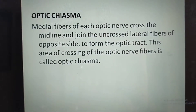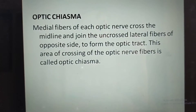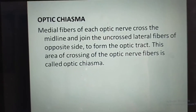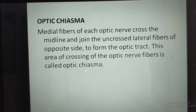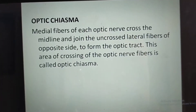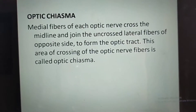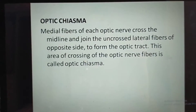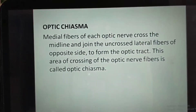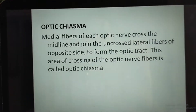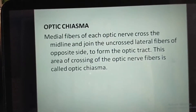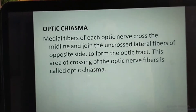Medial fibers of each optic nerve cross the midline and join the uncrossed lateral fibers of the opposite side to form the optic tract. This area of crossing of the optic nerve fibers is called the optic chiasma. The optic chiasma is the X-shaped structure formed at the point below the brain where the two optic nerves cross over each other.